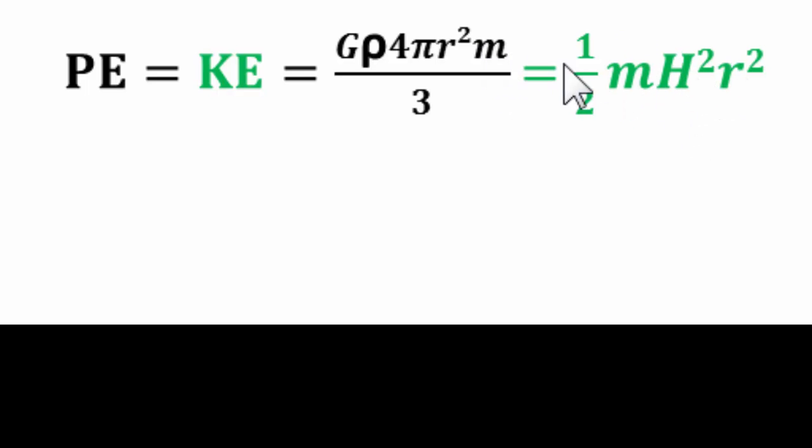We notice that we have an m here and an m here, so we can cancel those. And we basically have to rearrange this in terms of the density. And when we do that, we end up with the expression: the density, which is the critical density, is equal to 3H² divided by 8πG.